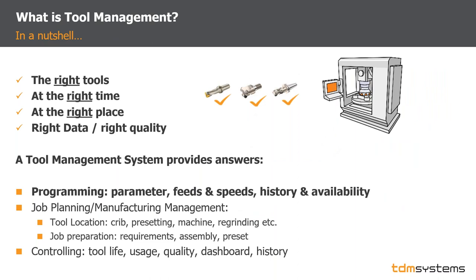A quick recap from last time: tool management is about having the right tools, right time, right place, and of course the right data quality. A basic tool management system manages items with all their parameters — dimensions, article number, price, and so on. Those items are used in tool assemblies, which are part of jobs to manufacture something. This manufacturing library provides information to the CAM programmer — parameters like speeds and feeds, historical information on how tools performed, and whether the tool assembly is available or needs to be reordered. This optimizes the entire process.